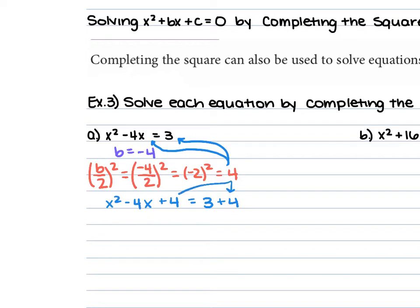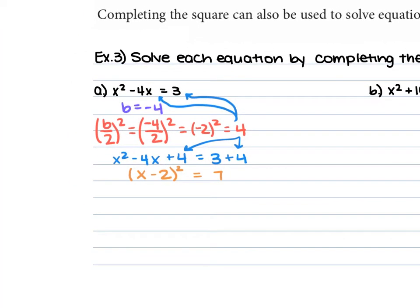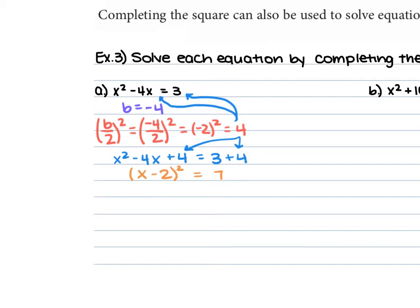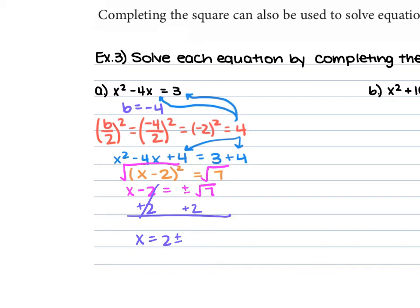So we get x squared minus 4x plus 4 equals 3 plus 4. We added it to both sides. Factor the left side and add the right: x minus 2 squared equals 7. Now solve for x by taking the square root of both sides. We have x minus 2 equals plus or minus the square root of 7. Remember that plus or minus because we're taking the square root. Add 2 to both sides: x equals 2 plus or minus the square root of 7.